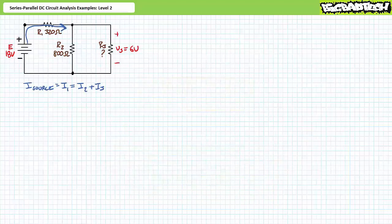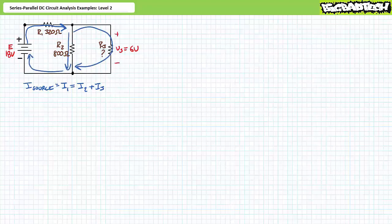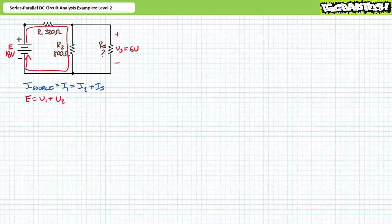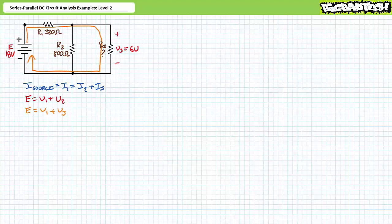Let's first use Kirchhoff's current law to analyze this circuit. Source current comes out of the source and must travel through resistor R1, so source current equals I1. Source current then splits into two paths, one going through R2 and the other through R3. Therefore source current equals I1, which equals I2 plus I3. A Kirchhoff's voltage law analysis of the red loop suggests E equals V1 plus V2. The orange loop suggests E equals V1 plus V3. The yellow loop suggests V2 equals V3.